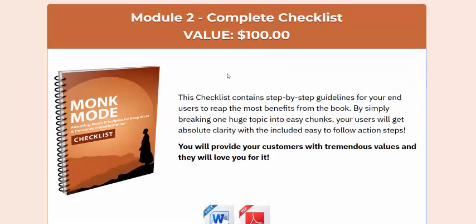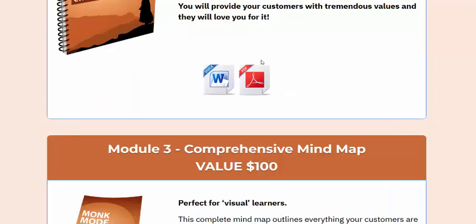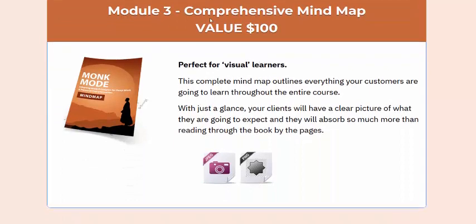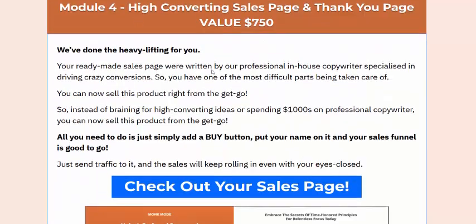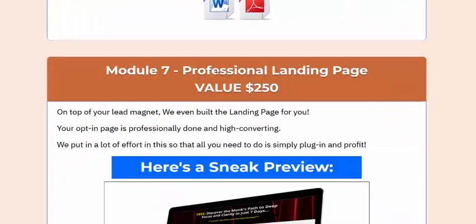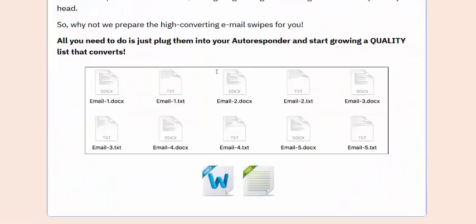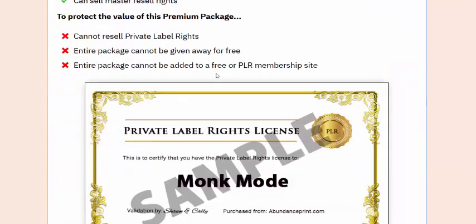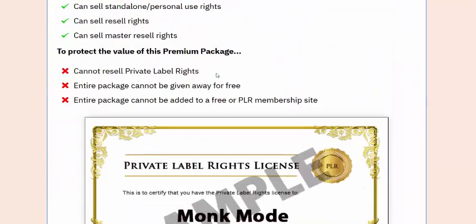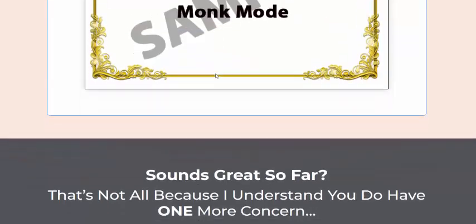Module Two is a complete checklist valued at one hundred dollars. Module Three is a comparison receipt mind map, also valued at one hundred dollars. Module Four includes an upsell chain model — check the sales page for full details.